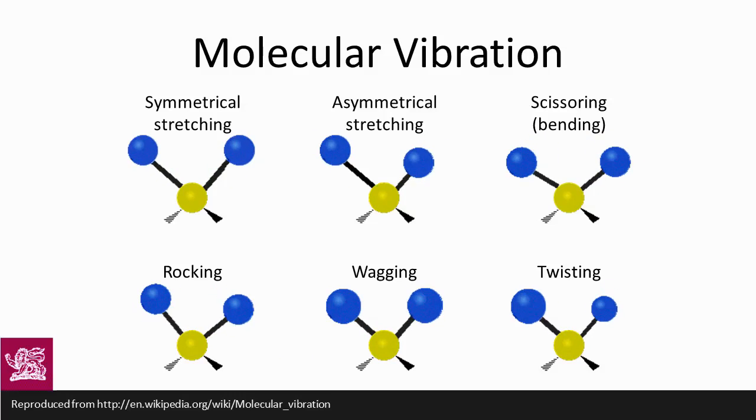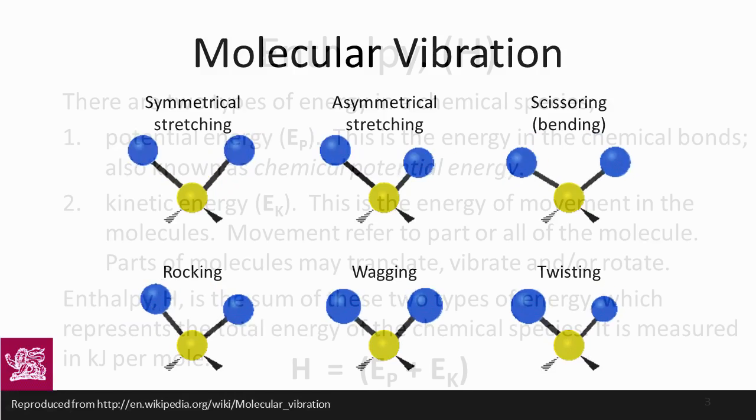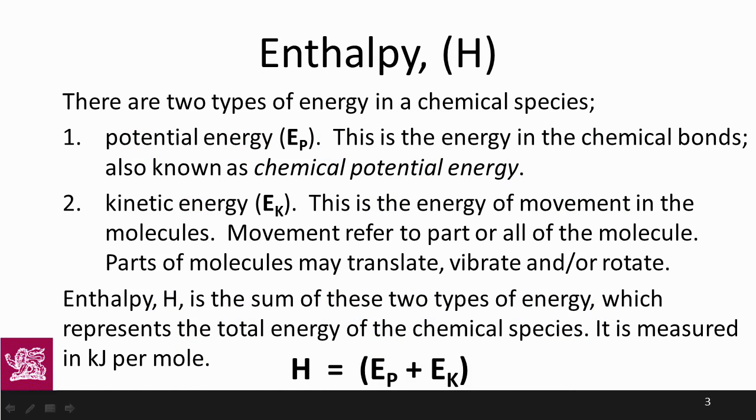So we get bending, we get stretching, we get all sorts of vibration inside the molecule. All of this movement is kinetic energy, and all of the energy stored in the bonds is called potential energy. Enthalpy is simply the sum of these two types of energy, and is measured in kilojoules per mole.